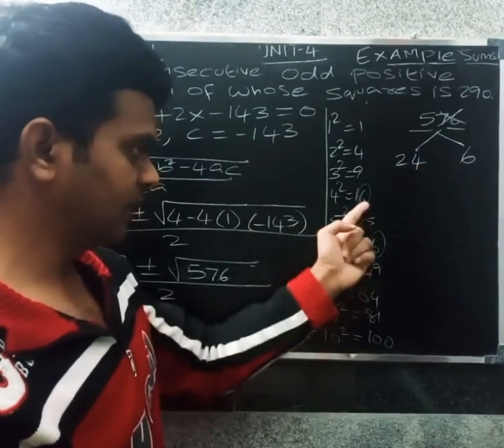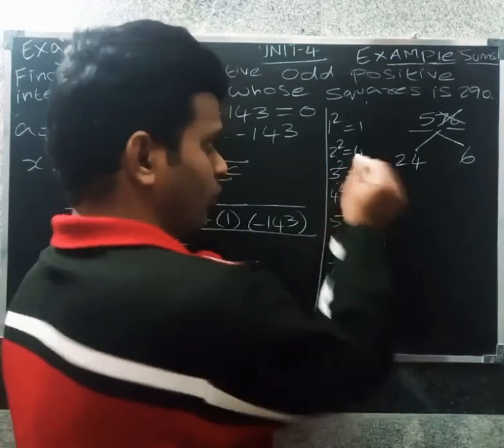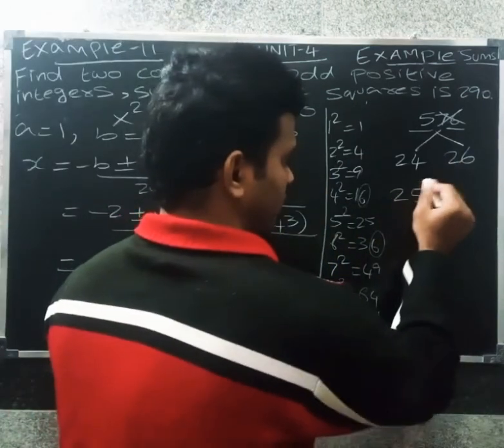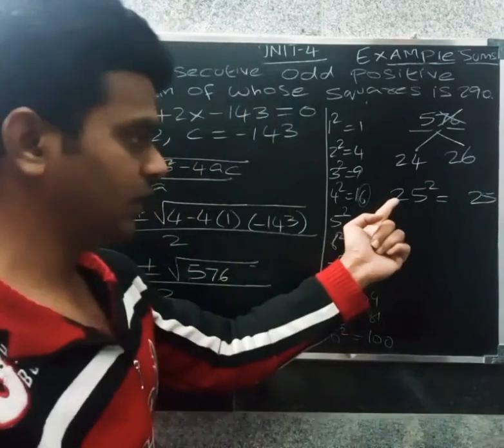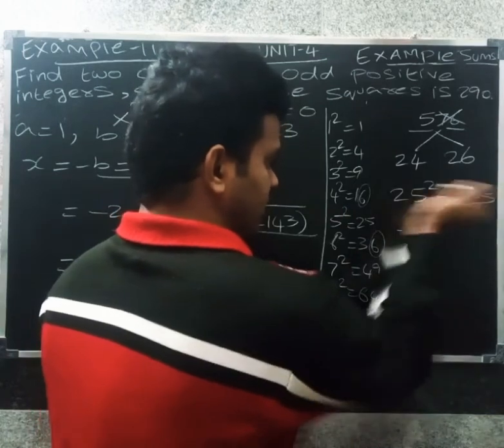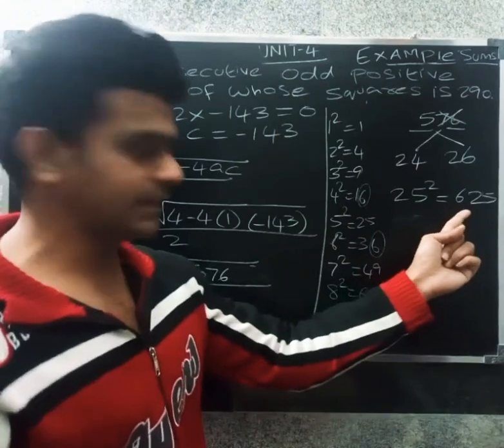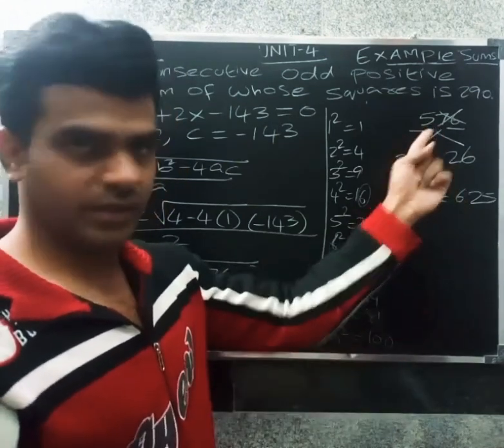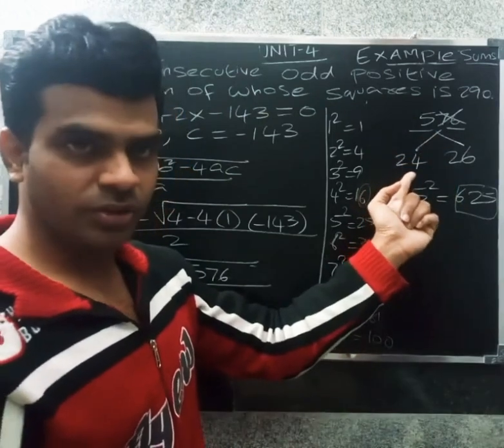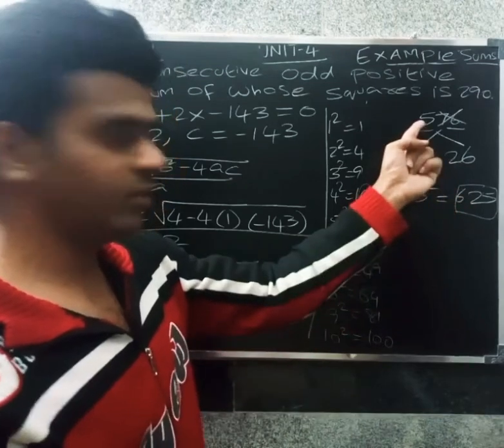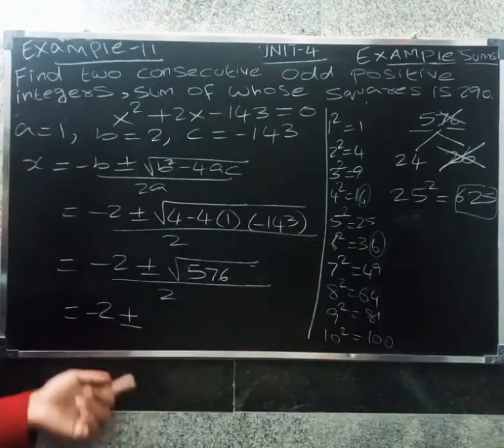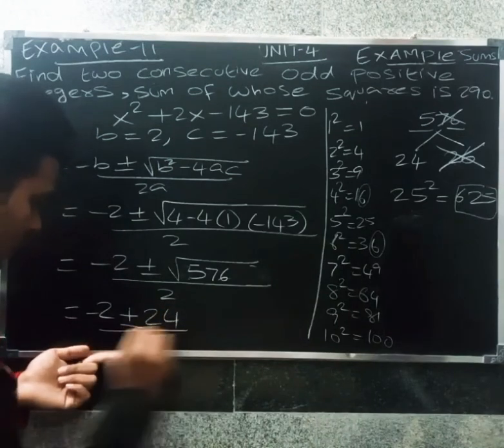Checking 24 and 26: 24 squared is 576, 25 squared is 625. So 24 squared equals 576. Therefore, root of 576 equals 24.